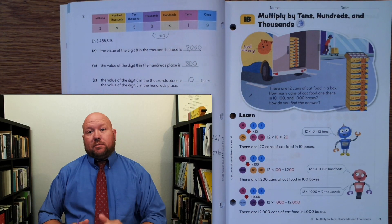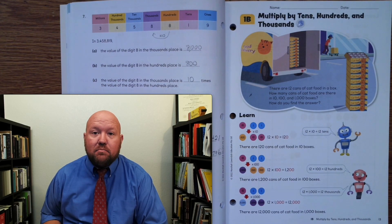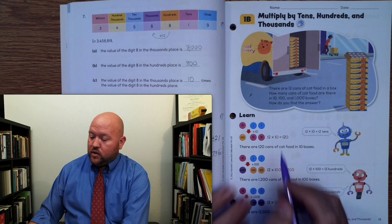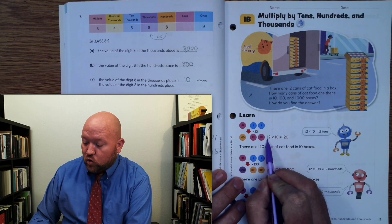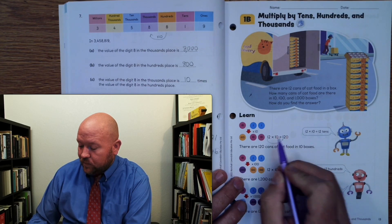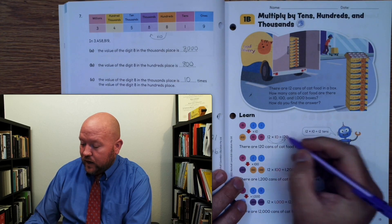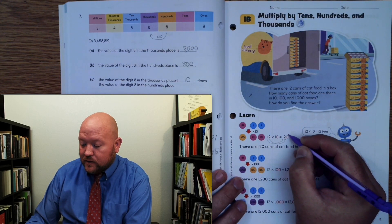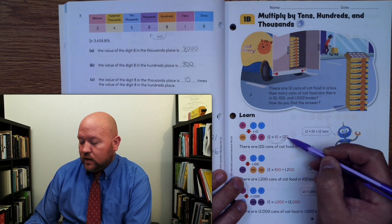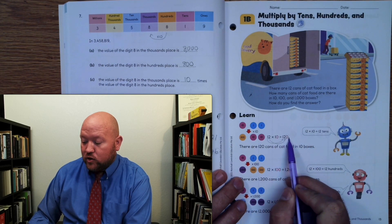We've talked about multiplying by 10 already. When we multiply by 10, all we are doing is moving the place value over 1. So the 1, which is in the tens place, moves to the hundreds place. The 2 moves from the ones place to the tens place. That leaves us with a place value that's open — what do we put in a place value? A zero. So 12 times 10 is 120.